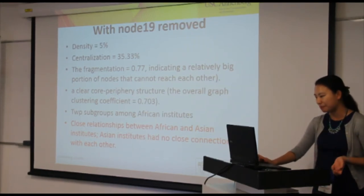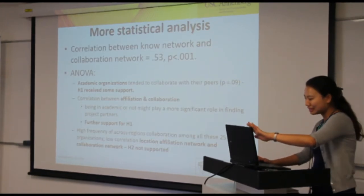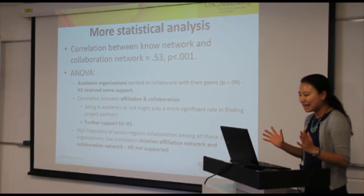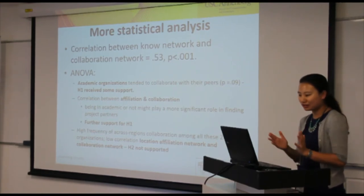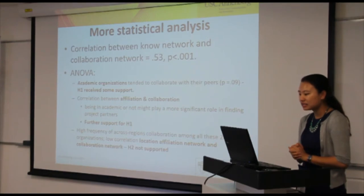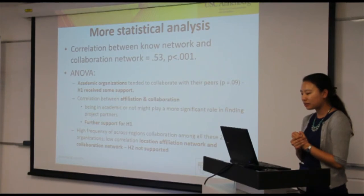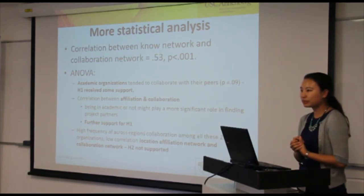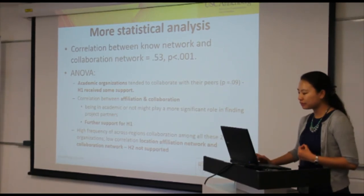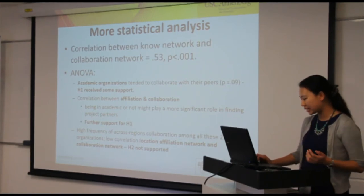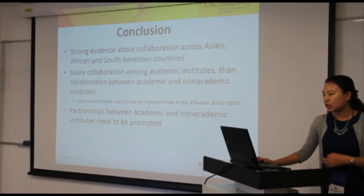Interestingly, within the African group there were two subgroups, and there was a close relationship between African and Asian academic institutes. However, Asian institutes showed surprisingly weak connections with each other. The homophily hypothesis was supported — birds of a feather do flock together. However, the geolocation network was not highly correlated with the collaboration network, providing preliminary evidence that geographic location may not be a significant barrier to implementation, as seen in the Africa-Asia academic collaboration.